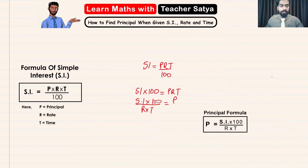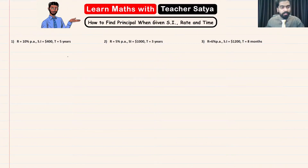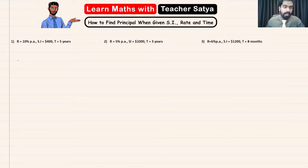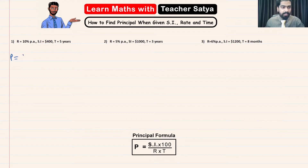In these questions, we are given the rate per annum, the simple interest, and the time, and we have to find the principal. So right off the bat, let us start by writing the principal formula: P = SI multiplied by 100 over R times T.